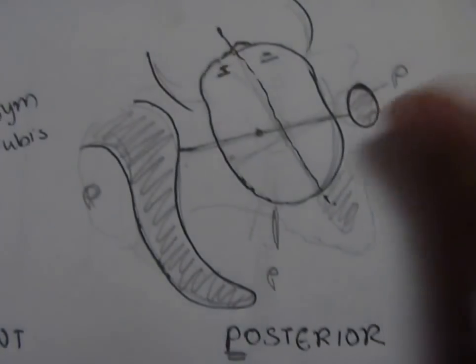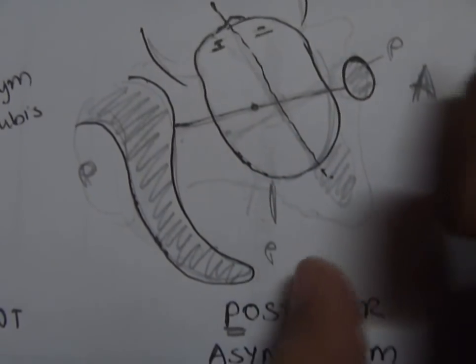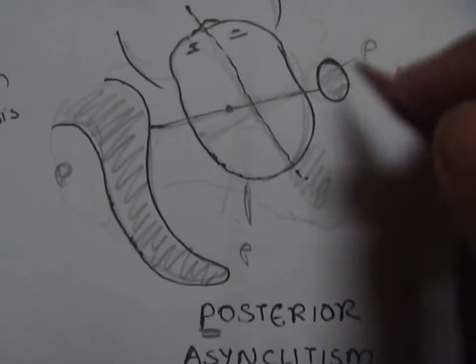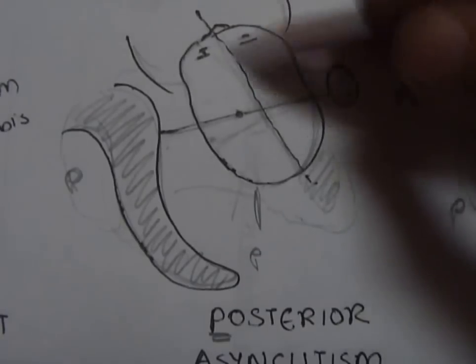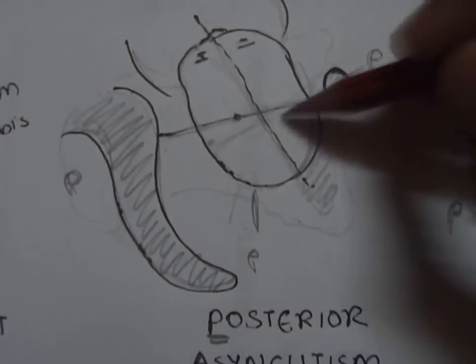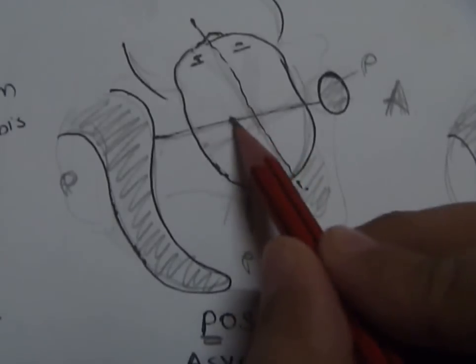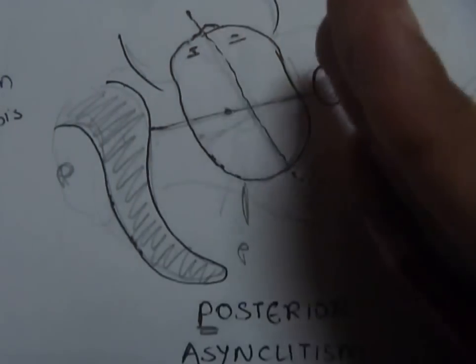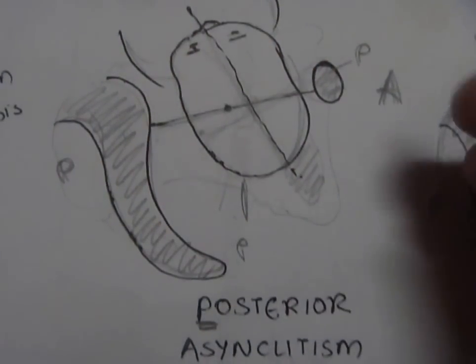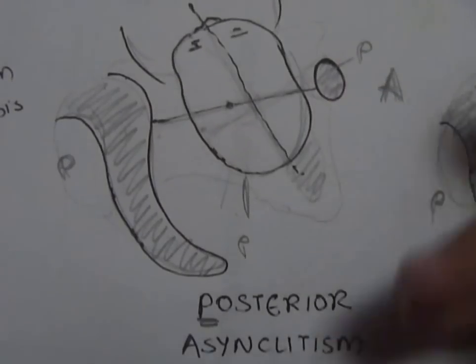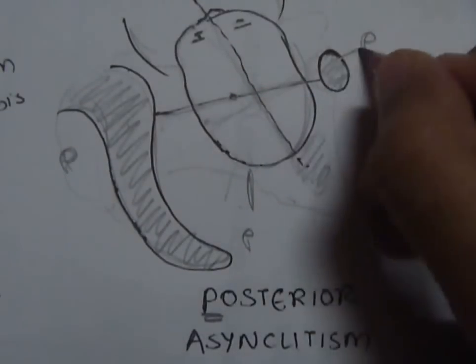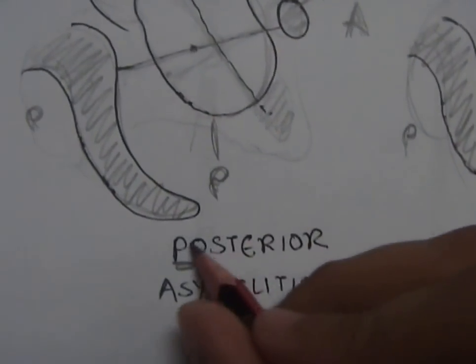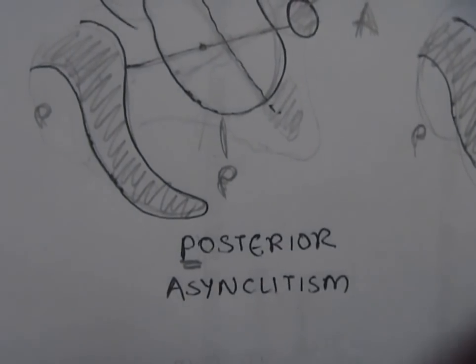And as you can see, the sagittal suture is more nearer to the pubis. This would be the midway between the pubis and the sacrum, and it is more towards the pubis. Now it has a lot of P's, you know: P for pubis and P for posterior parietal bone and P for posterior asynclitism, so it is very easy to remember this in case you forget.